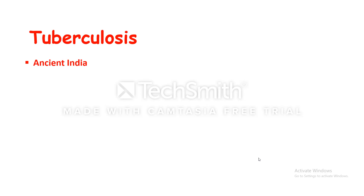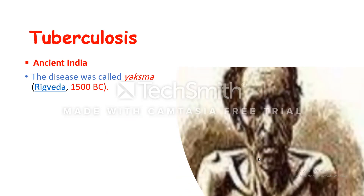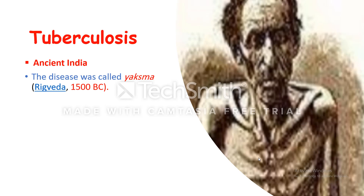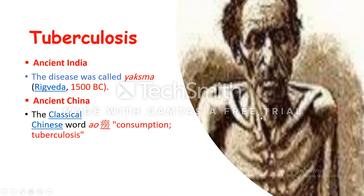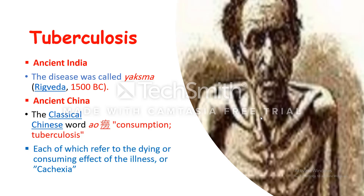Tuberculosis was also known in ancient India, where it was called yakshma around 1,500 BC. Look at this man — this is not an old man, but this was the effect of the disease, the cachexia and consumption induced by tuberculosis. In ancient China it was known as lao, meaning consumption. Tuberculosis was given so many names, each of which referred to the dying or consuming effect of the illness.